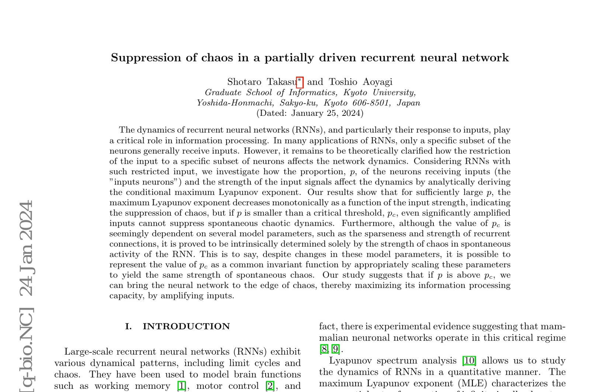The conditional maximum Lyapunov exponent is analytically derived to study these effects. Results show that for a sufficiently large proportion of input neurons, the maximum Lyapunov exponent decreases monotonically with input strength, indicating chaos suppression.